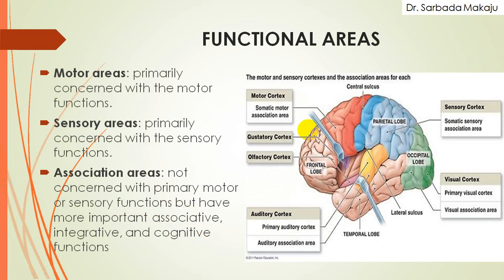The functional area of the cerebrum has been divided into three parts: the motor area, the sensory area, and the association area. The motor area is associated with motor functions. The sensory area is primarily concerned with sensory functions. The association areas are not concerned with the primary motor or sensory function, but have important associative, integrative, and consecutive functions.